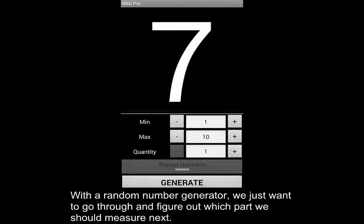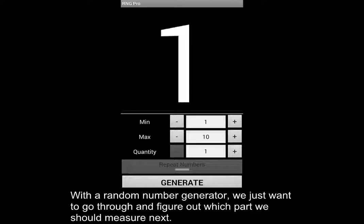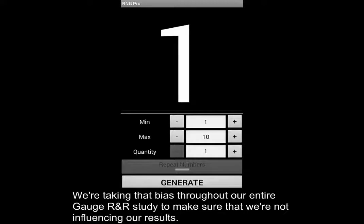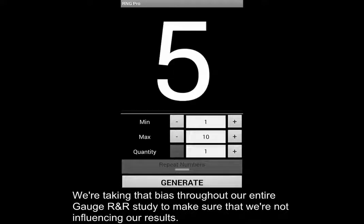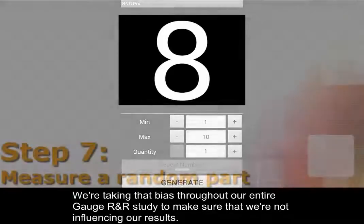With a random number generator, we just want to go through and figure out what part we should measure next. And so we're taking that bias throughout our entire gauge R&R study to make sure that we're not influencing our results.